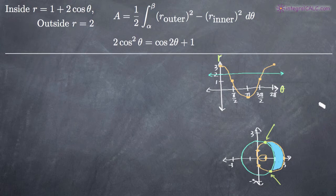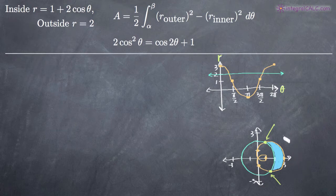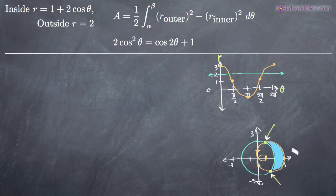If you can graph the polar curves, it'll help you figure out exactly which area you need to look for, and especially when you start working in a polar coordinate system, it makes things easier. So I went ahead and graphed them in a Cartesian plane and then in a polar coordinate system. You can see down here we've got two points of intersection that I've identified, and those are going to define our upper and lower limits of integration, which we'll plug in for alpha and beta.